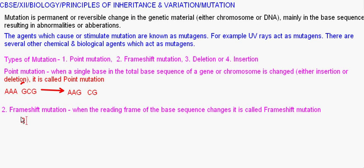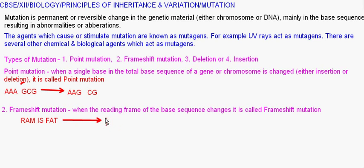Now, if you just remove the letter 'i' from 'Ram is fat,' the result is 'Ram if at' — the reading frame shifts. Due to removal of 'i,' it becomes 'Ram,' then 'if,' then 'at.' So one letter shifts the reading of the whole sequence. This is a shift in the reading frame caused by deletion. Insertion is when one more base is added — it is also a type of point mutation.